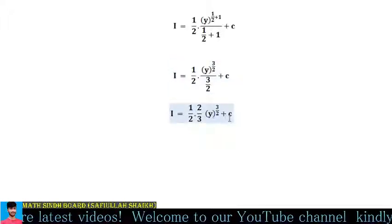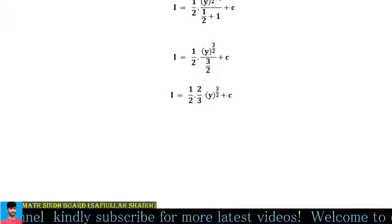Now 1/2 times 2/3 simplifies as the 2s cancel out, leaving only 1/3. So we have 1/3 times y^(3/2), plus c.